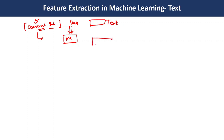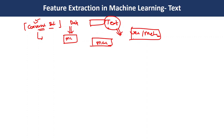As a machine, it doesn't understand this text data directly, so we have to convert this text data into a vector or into a matrix. This conversion from text to vector or matrix is done using some technique or method — that is called feature abstraction from text data. We use different techniques like bag of words and TF-IDF. There are different methods used to perform text data pre-processing, and we will cover all these steps in natural language processing (NLP).